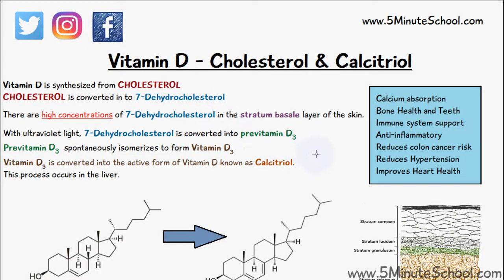In today's video we're going to be talking about vitamin D. Vitamin D is synthesized from cholesterol. First, this cholesterol needs to be converted into something called 7-dehydrocholesterol, and from here vitamin D is eventually able to be produced.